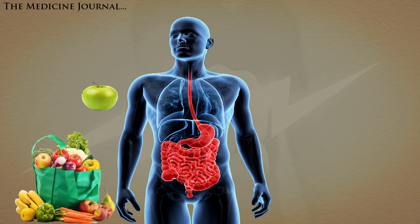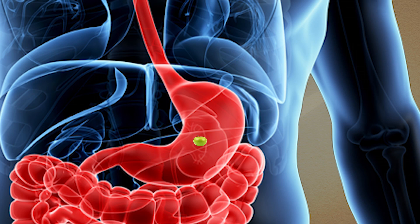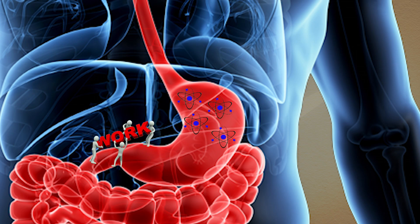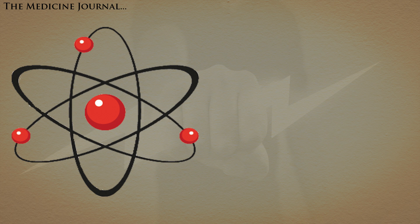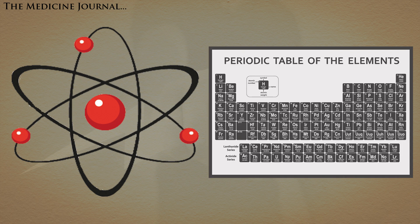When we eat or drink, the large molecules within our food get broken down by digestion, creating smaller molecules. Those smaller molecules can be used by our cells to do work. This process is called cellular respiration. All of those molecules and elements in our bodies have the potential to create electrical impulses.